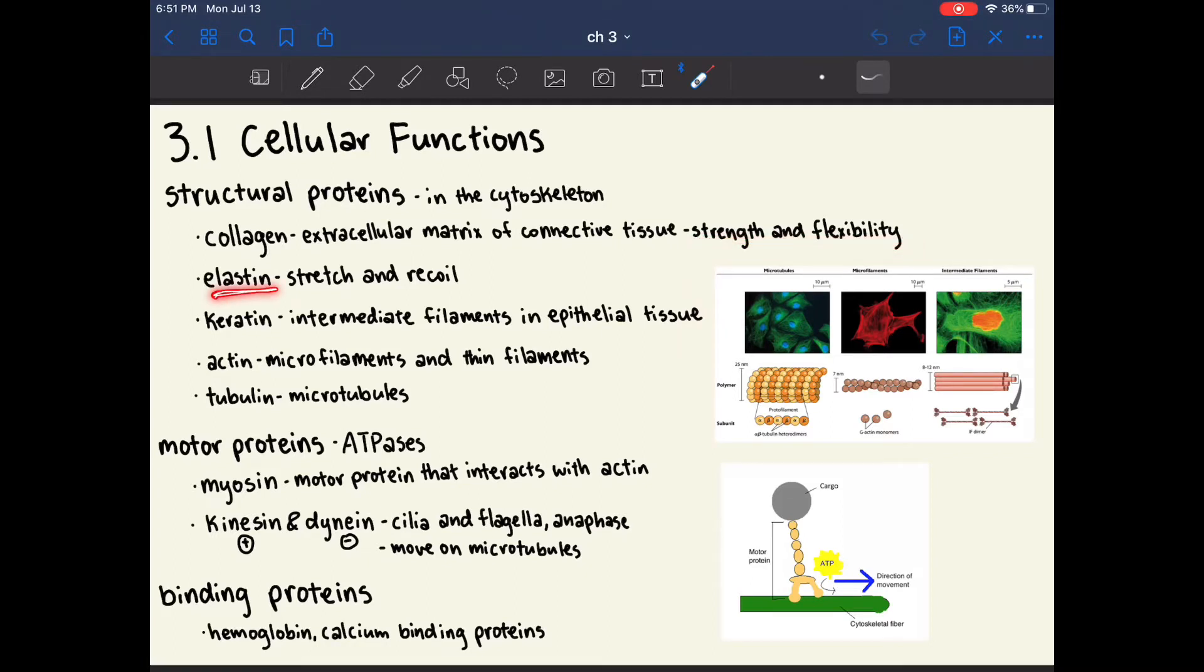Elastin is another protein that's found in the extracellular matrix of connective tissue, but elastin offers stretch and recoil properties. It's really easy to remember what elastin does because it's much like an elastic. It allows things to stretch and then bounce back.